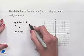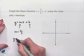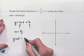The b value is our y-intercept, and in this case, our y-intercept is going to equal negative one.